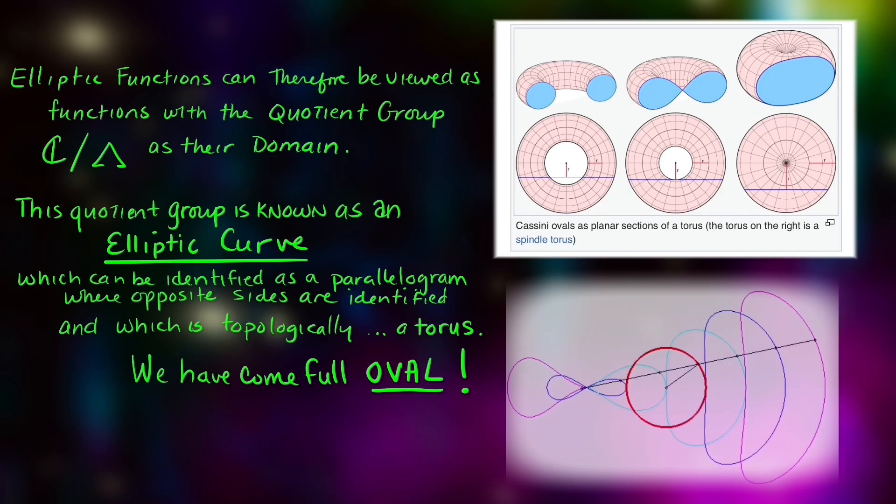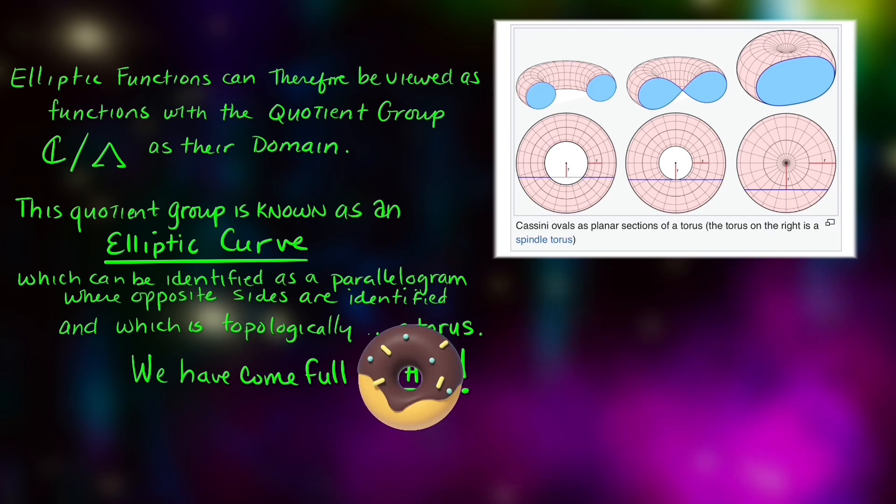The elliptic functions therefore can be viewed as functions with the quotient group, complex numbers modded out by this group, and the quotient group is known as an elliptic curve, which can be identified as a parallelogram where opposite sides are identified, and is topologically equivalent to a torus.